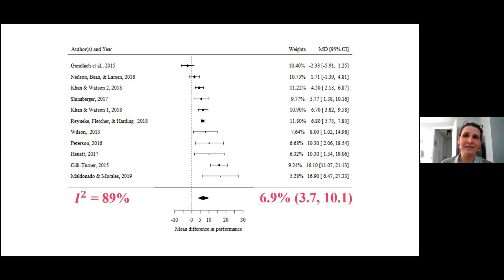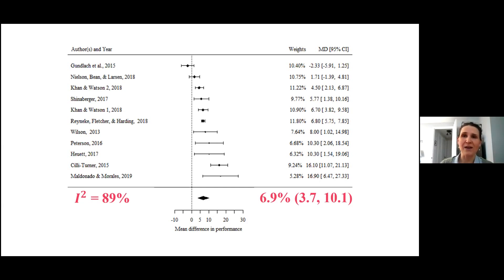We fit a random effects model since we could not assume that all the studies were estimating a single treatment effect. The pooled meta-analytic effect was a simple weighted unstandardized difference in means in either the final exam or final grade percentage. This pooled difference for the 11 studies was 6.9%.